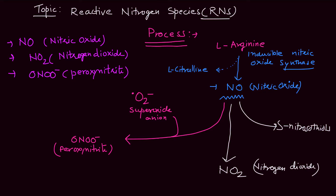These reactive nitrogen species are really important in the case of our immune system, because these species are released by the cells and they cause the killing of microbes — the pathogenic microorganisms.